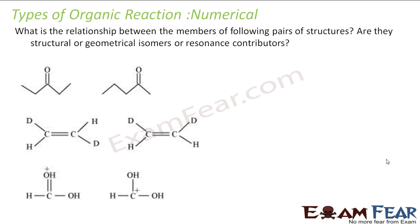We have to find the relationship between the members in the following pairs. Are they structural or geometrical isomers or resonance contributors? So if you see these two guys, actually if you see the position of ketone is changed. So it is structural isomer or position isomer. This guy, if you see, the groups are in the trans position. Here it is cis position. So this is geometrical isomer.